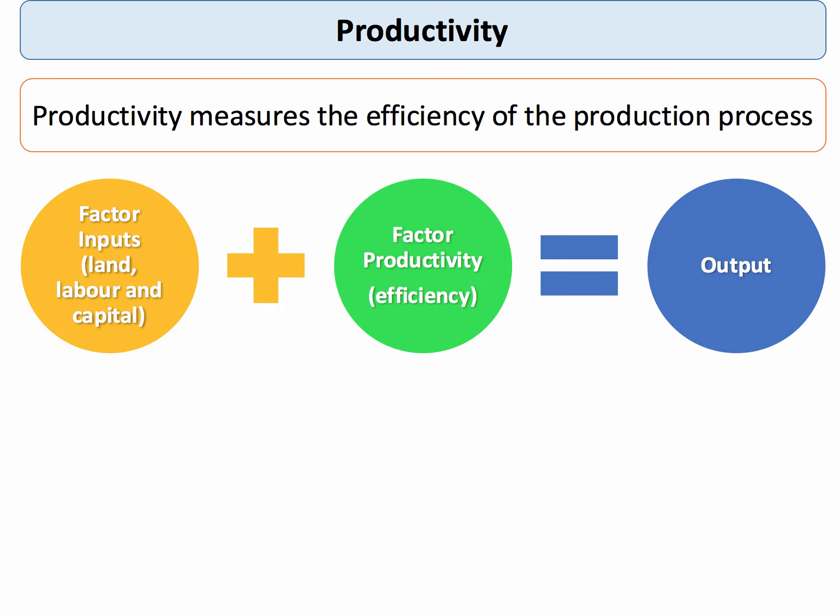If we take the factor inputs — land, labour and capital — and we add in the change in the productivity or the efficiency of factors of production, that will generate for us the output of goods and services.